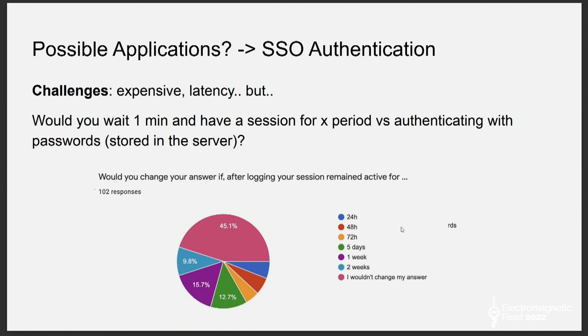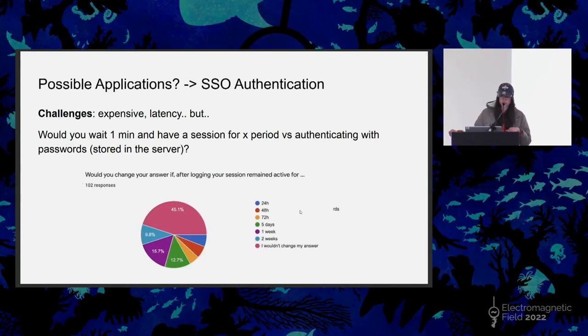My research mostly involved possible applications of Zero Knowledge, one of which was using single sign-on authentication. For those who don't know what single sign-on is — we use it every day. For example, when you want to log into an application using your Gmail account and select 'sign in with Google,' or using things like Okta. I was researching re-architecting the whole SAML flow by adding a step where instead of verifying the password, you verify the hash of a password, involving a more Zero Knowledge architecture. I found in a survey that most people would be happy not having to input their password every single time — but the challenge is that to compute those calculations with elliptic curves, it takes a long time.